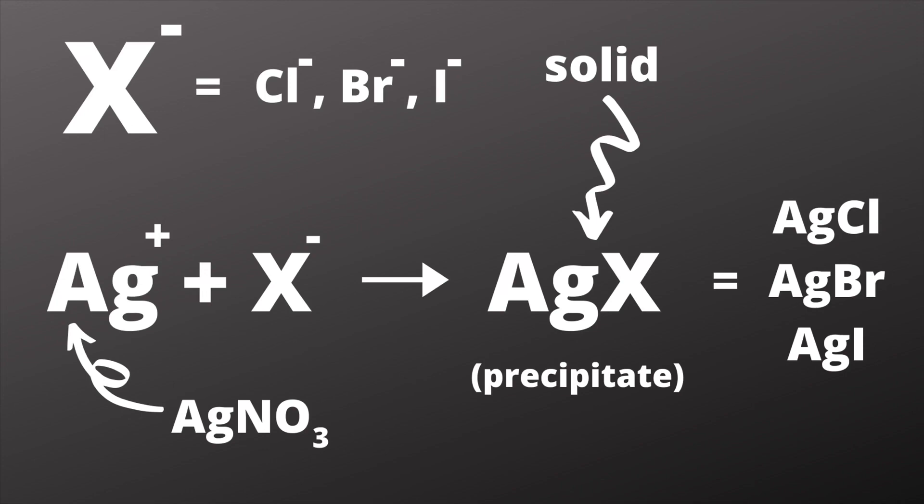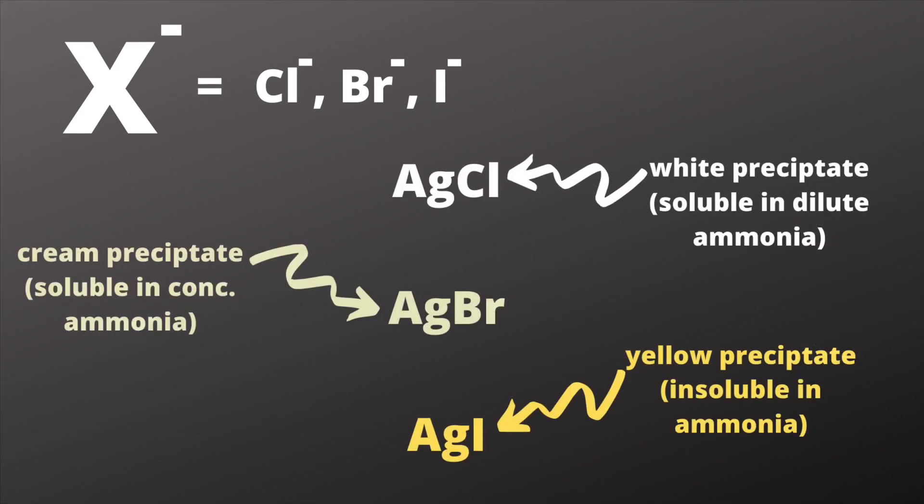Now they readily form a precipitate in solution with silver ions that we get from silver nitrate. Silver nitrate is AgNO3 and that provides our Ag⁺ silver ion.